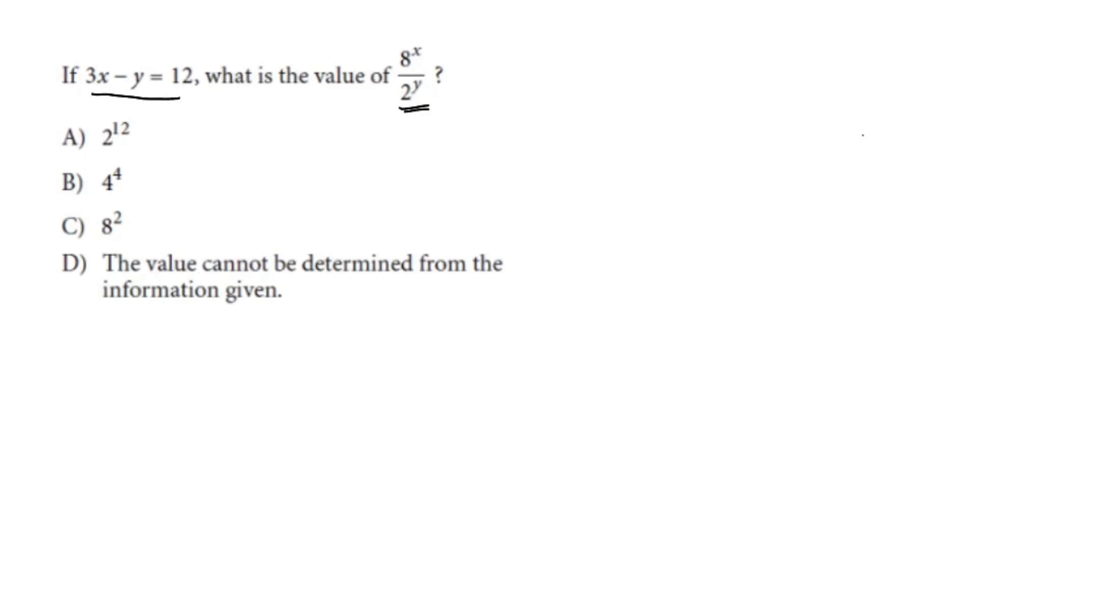We have to understand this important exponent rule. If I have x to the power of a over x to the power of b, it's equal to x to the power of a minus b. But what's important here is that they have the same base.